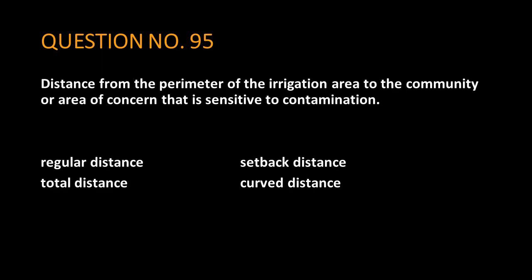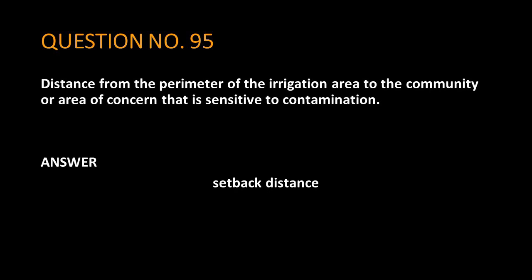Question No. 95. Distance from the perimeter of the irrigation area to the community or area of concern that is sensitive to contamination. The answer is setback distance.